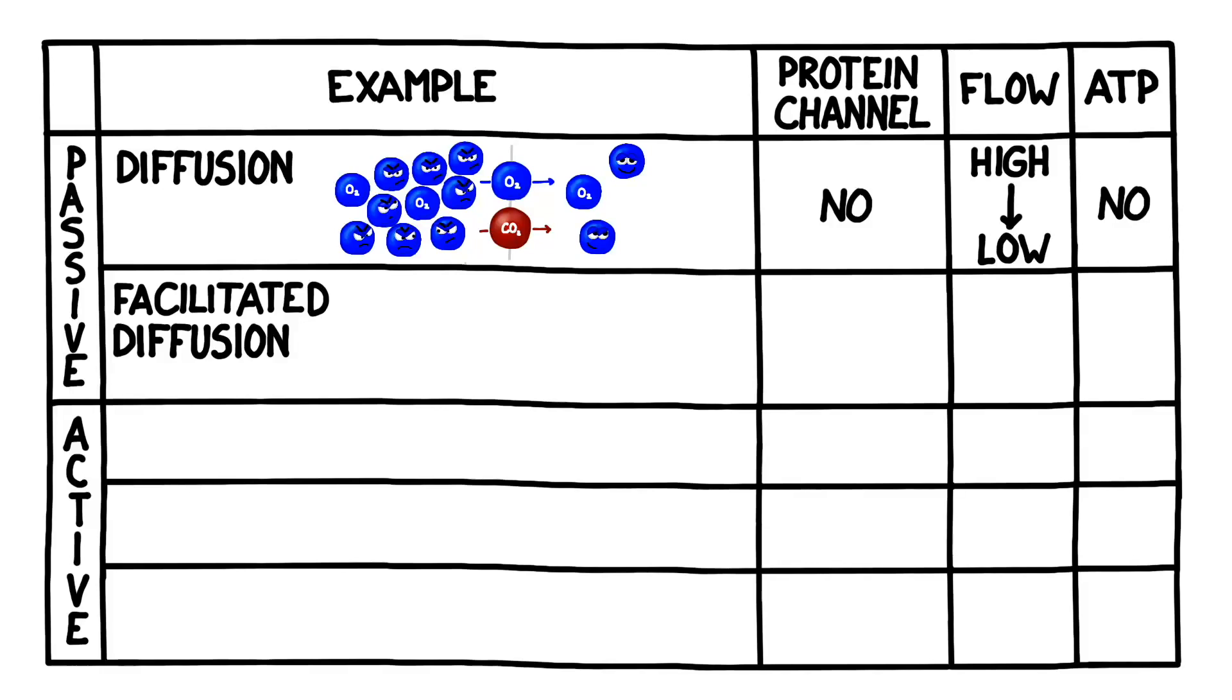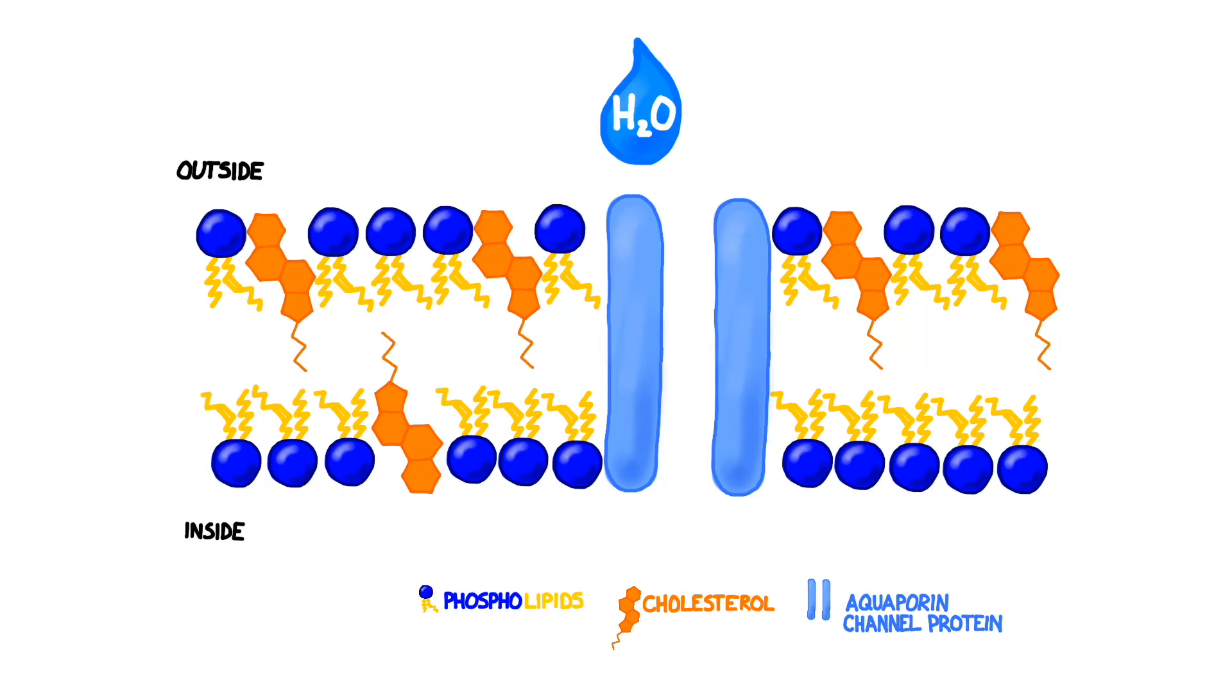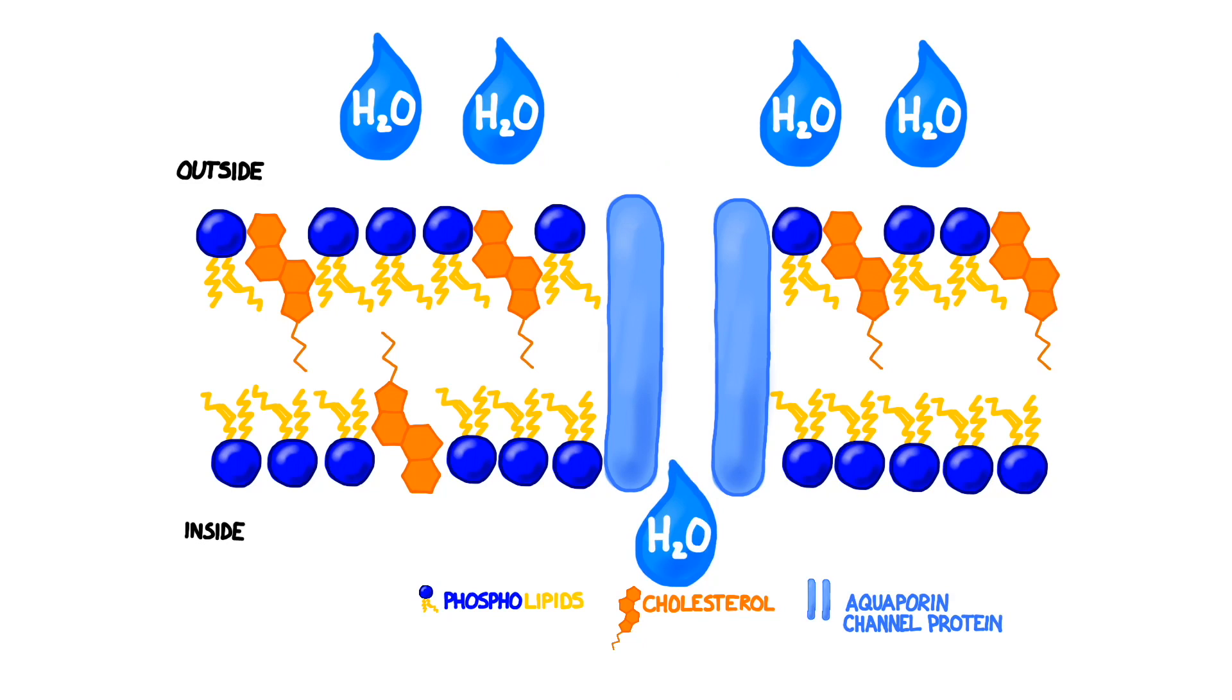Next up is a slightly different type of passive transport called facilitated diffusion. Remember that large or polar molecules can't fit through the cell membrane. Water isn't a very large molecule, but its polar structure makes it unable to slip through the membrane on its own. In facilitated diffusion, the cell uses channel proteins to allow large and or polar molecules to pass through. Water diffuses through the cell membrane using special channel proteins called aquaporins. Whenever water diffuses across a membrane, we call it osmosis.